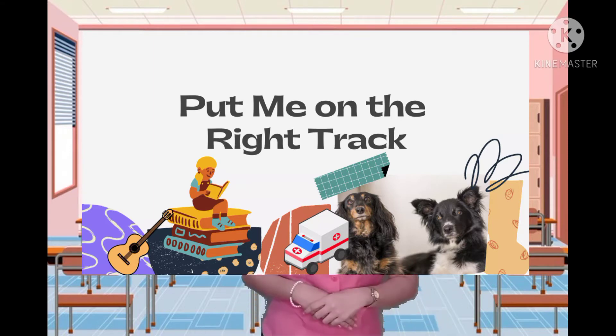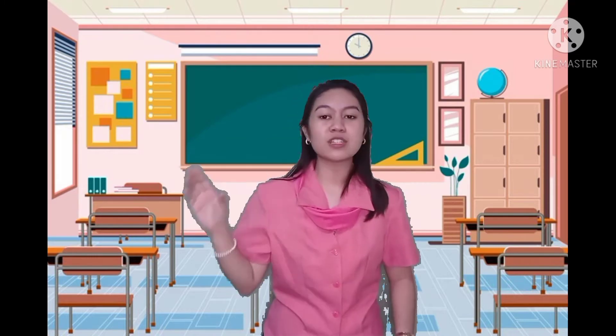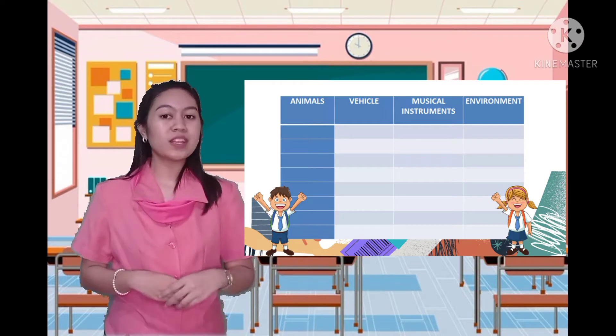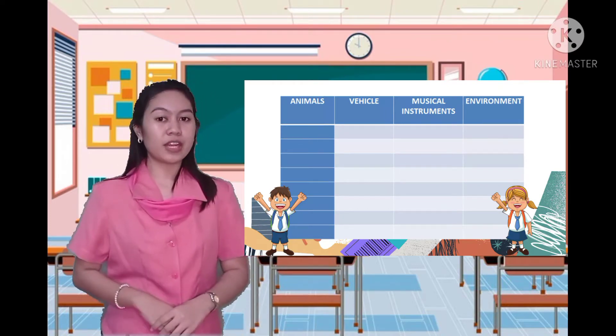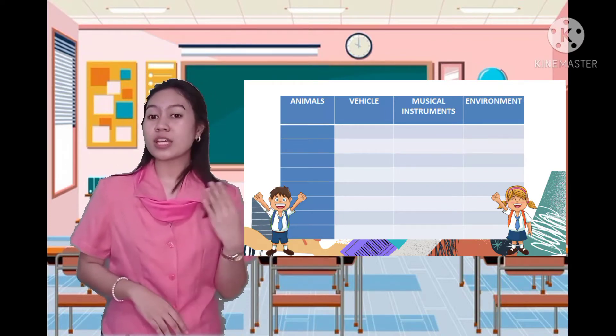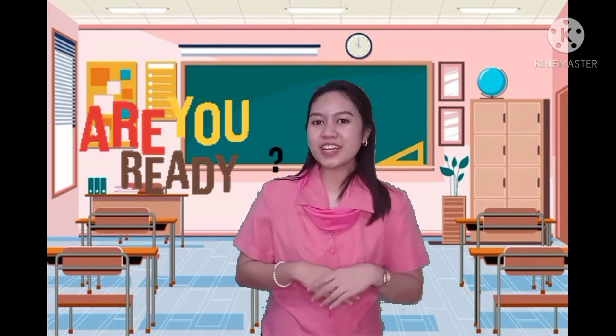In this activity, all you need to do is to listen attentively to the sounds that will be played in order to classify whether it is produced by an animal, musical instrument, vehicle, or the environment. Draw a table and divide it into four columns for each category, like what you can see on your screen. You will only have two minutes to do this activity. Are you now ready to listen?